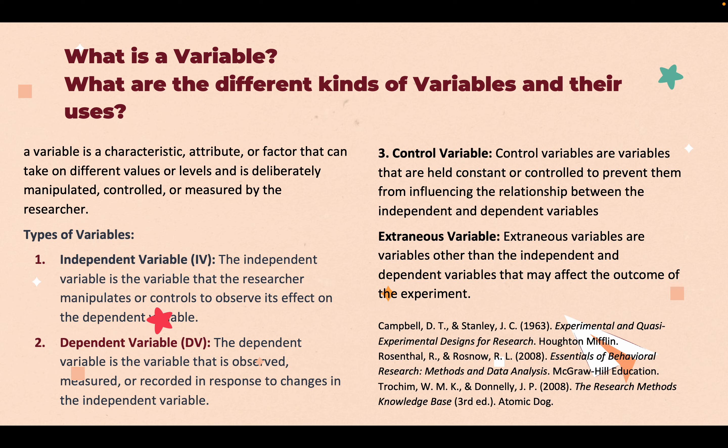For example, when studying the impact of different teaching methods on student test scores, the teaching method is the independent variable, while the scores of the students are the dependent variable.